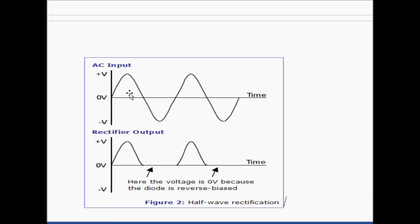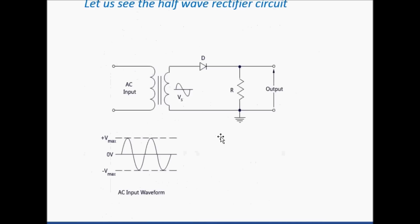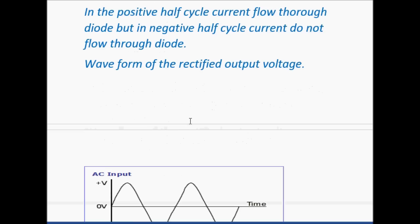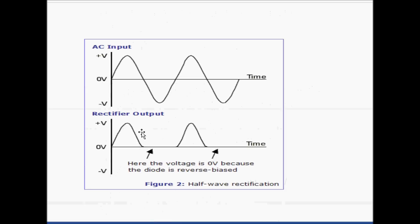In this diagram, this is the AC input — positive half cycle and negative half cycle. When it enters through the diode, in the positive half cycle the current will flow. In the negative half cycle, there is zero flow of current through the diode. And in the next positive half cycle, current will flow. Because the diode is connected in this direction, this side is positive. So in the positive half cycle only, current flows, and the output waveform appears only in the positive half cycle.